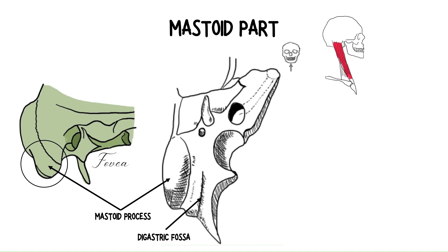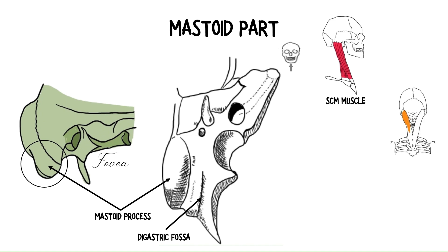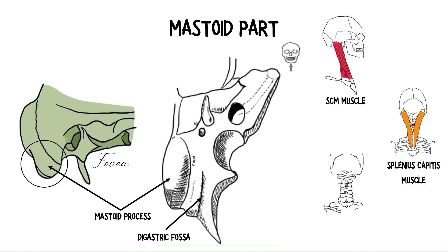The mastoid process itself gives rise to the sternocleidomastoid muscle, which with a unilateral contraction rotates the head to the contralateral side. The splenius capitis muscle, which with a unilateral contraction extends, rotates, and laterally flexes the head. The longissimus capitis muscle, which laterally flexes and rotates the head and neck if one side alone contracts, as well as extends the head if both sides contract.